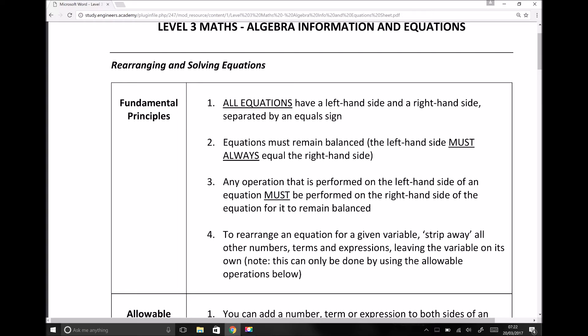And number four there on the fundamental principles is to rearrange an equation for a given variable, we need to strip away all other numbers, terms and expressions, leaving the variable on its own. Note this can only be done using the allowable operations below. When we start to look at some specific examples of how to rearrange equations, I'm going to use this terminology of stripping away other terms and expressions to leave the thing that we're trying to find on its own. And it's really useful to think of it like that because it helps us to structure the equations, but it also helps us to make decisions about what steps to do first in order to get that thing that we're trying to find on its own.